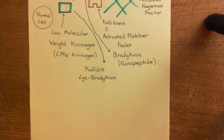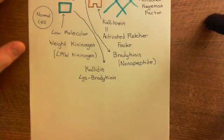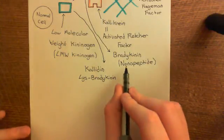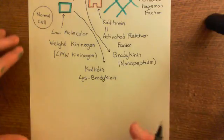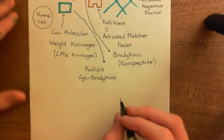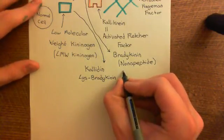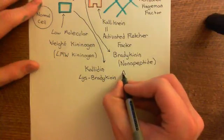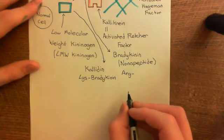Let's have a look at the amino acid structure of bradykinin, and then we can infer the structure of kallidin from that. It's a nonapeptide. Its amino acid sequence begins with an arginine at position one.